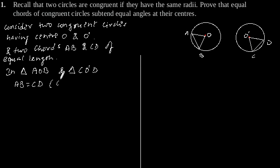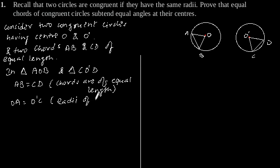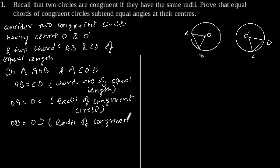AB equals CD since the chords are of equal length. OA equals O'C since they are radii of congruent circles, and OB equals O'D as they are also radii of congruent circles.